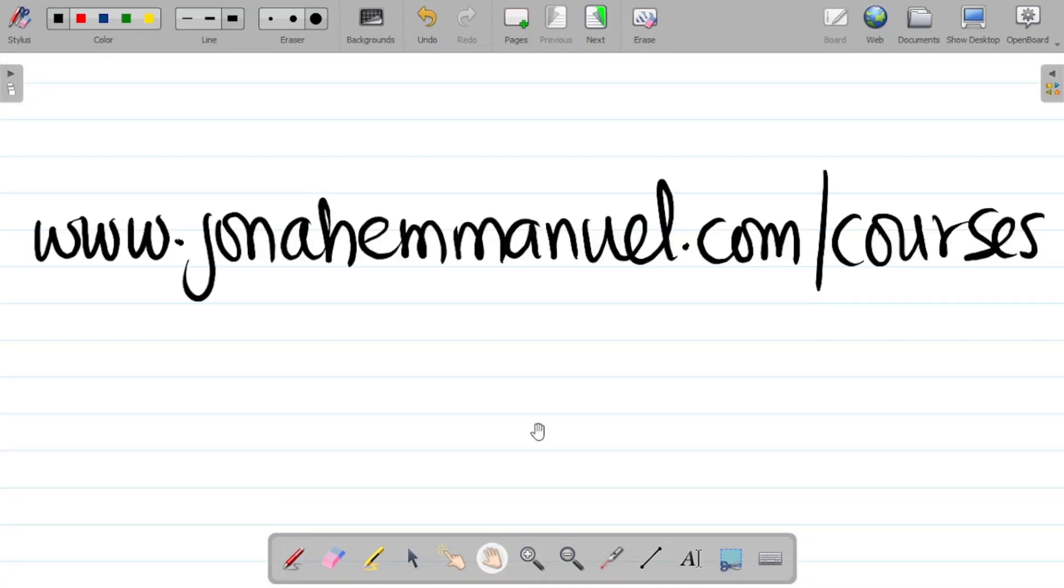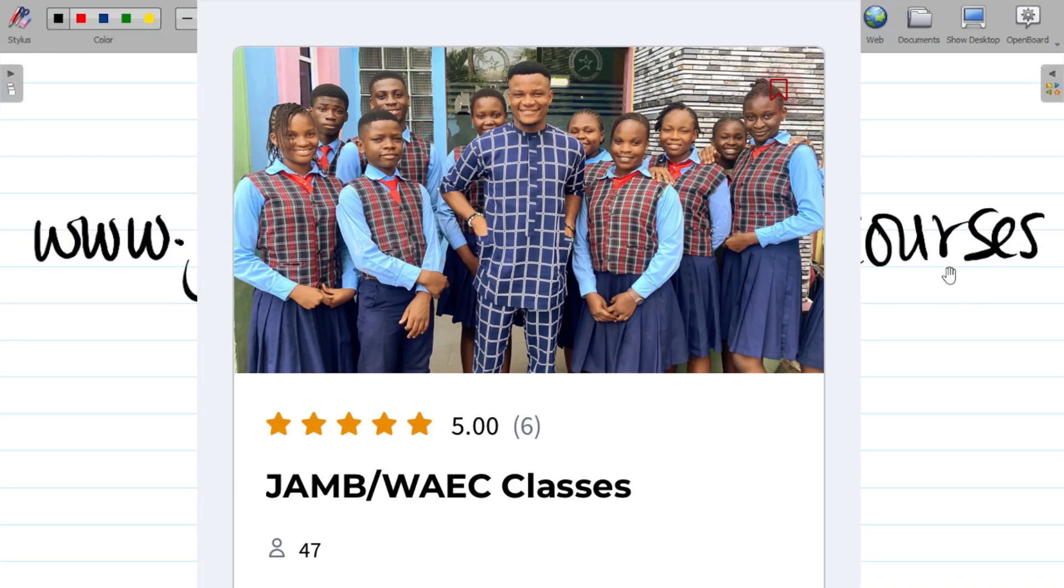I've prepared over 100 classes on some of the major topics in physics, chemistry, mathematics, and other science subjects. For each of these topics, I've treated past questions for JAMB and WAEC for the last 10 years. In order to access these courses, simply visit my website, www.joshuaemmanuel.com/courses, and you'll see the JAMB/WAEC course. You can first of all create an account for the website and then proceed to order for the course. It gives you a lifetime access to each of these courses and the new courses we'll be bringing in.